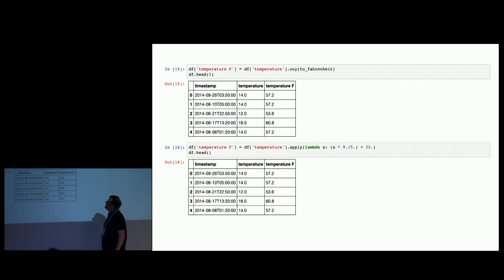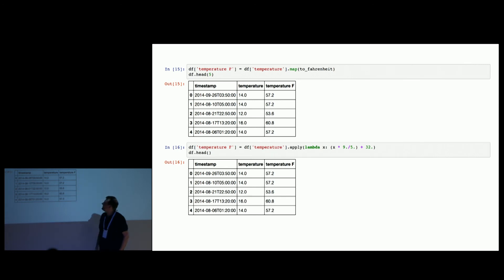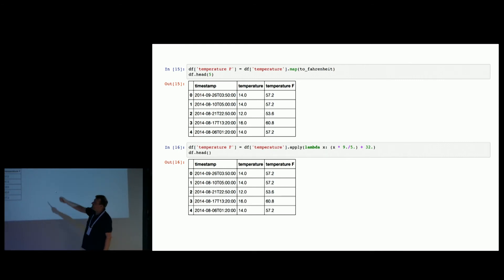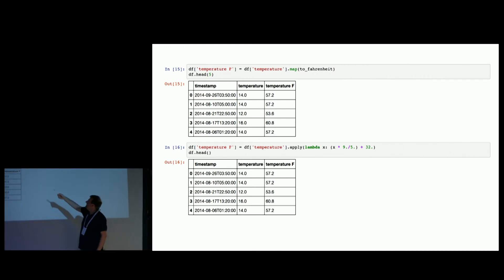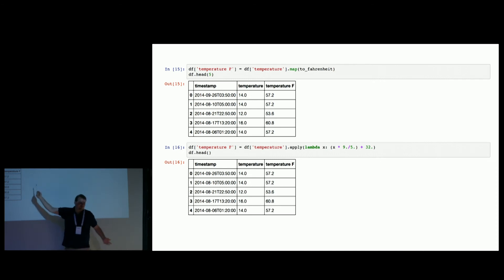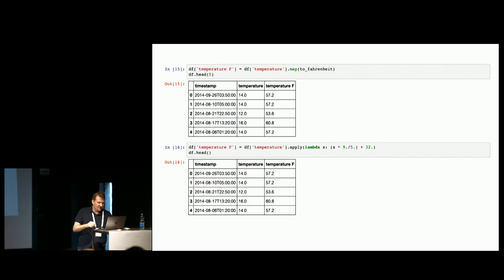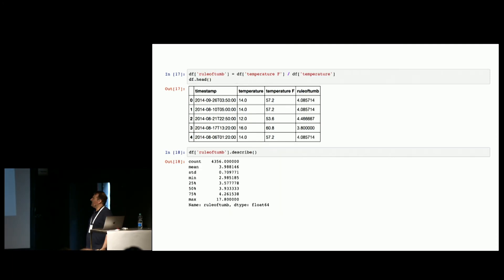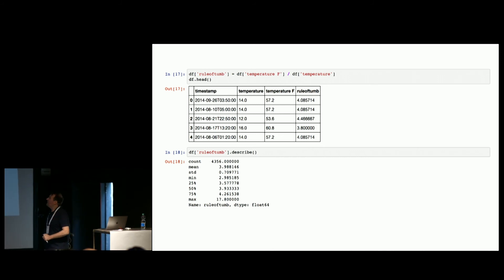You don't need to define an extra method — you can also just apply a lambda function inline. It's the same idea, just more flexible. So let's see how far we can get with a rule of thumb for Celsius to Fahrenheit conversion.